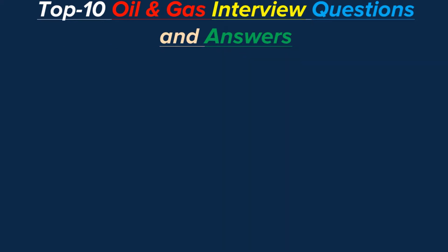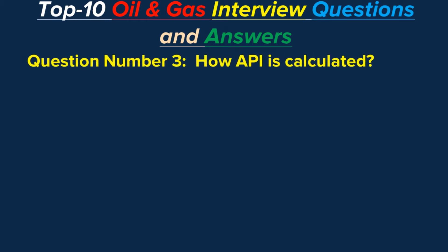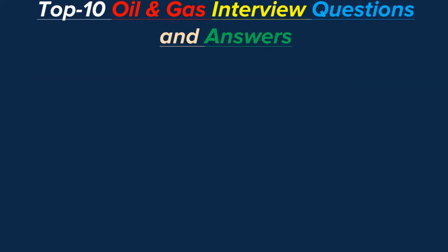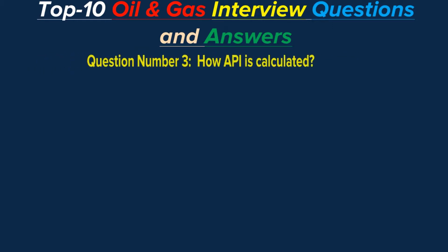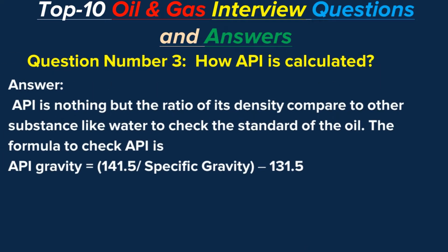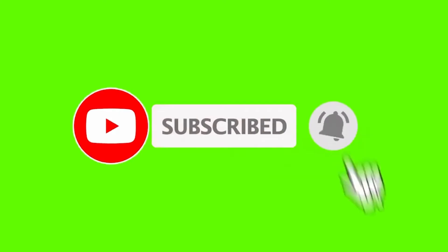Question number three: How is API Gravity calculated? API Gravity is the ratio of the density of oil compared to another substance like water, to check the standard of the oil. The formula to calculate API Gravity is: API Gravity = (141.5 divided by specific gravity) minus 131.5.